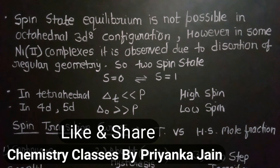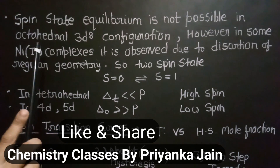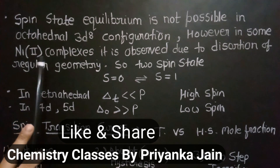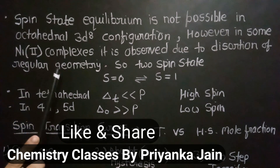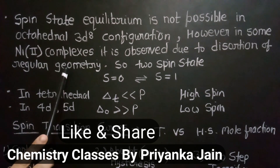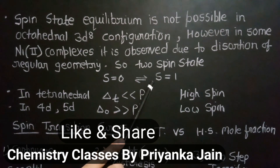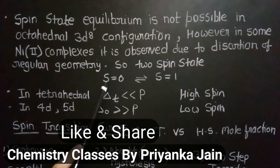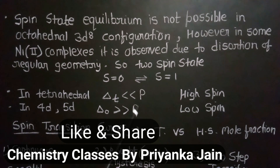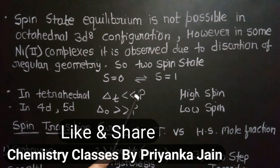Spin crossover is generally not possible in d8 octahedral complexes. However, in some Ni²⁺ complexes it is observed due to distortion of regular geometry, giving two spin states with S=0 and S=1 in equilibrium. In tetrahedral complexes, the crystal field splitting energy is much smaller than pairing energy, so electrons prefer the higher level and high spin complexes dominate — spin crossover is generally not observed there.